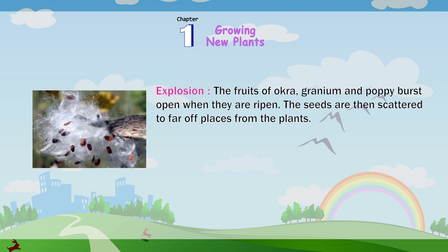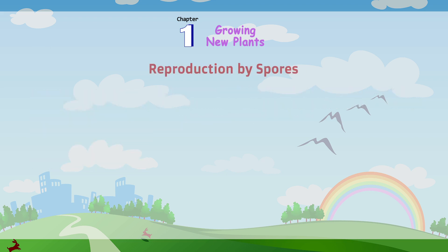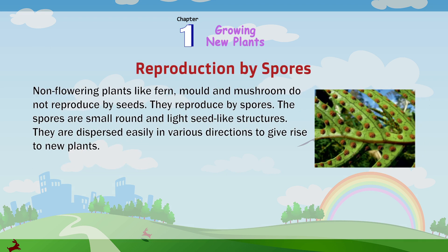Explosion: the fruits of okra, geranium and poppy burst open when they are ripened. The seeds are then scattered to far-off places from the plants. Reproduction by spores. Non-flowering plants like fern, mold and mushroom do not reproduce by seeds. They reproduce by spores. The spores are small, round and light seed-like structures. They are dispersed easily in various directions to give rise to new plants.